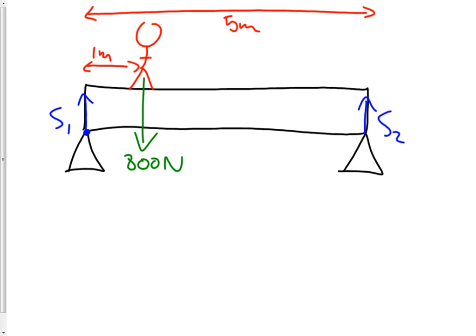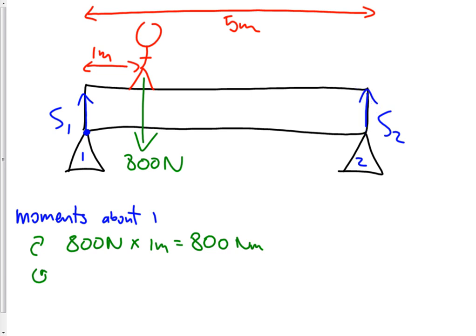So, if we call this like support one and this support two. If we take moments about the tip of support one, we have a clockwise moment coming from the weight of the person. 800 newtons times one meter equals 800 newton meters. We have an anti-clockwise moment coming from this support force, which we would just simply call S2 times the distance five meters away from the point we're taking moments about. And because the bridge is balanced, we can equate these. So, 5S2 equals 800.